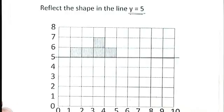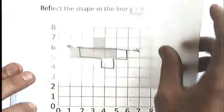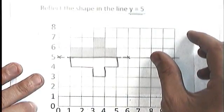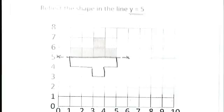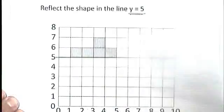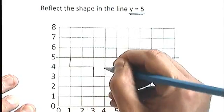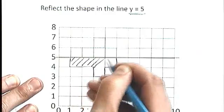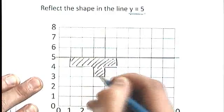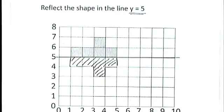I've taken the tracing that I did. I've flipped it over. And I've lined up my line, my mirror line like that. And you can see where the shape needs to go. It needs to look like this. Obviously you should try and do this a bit neater than I'm doing it. There we go. That is the reflection of the shape in the line y equals 5.